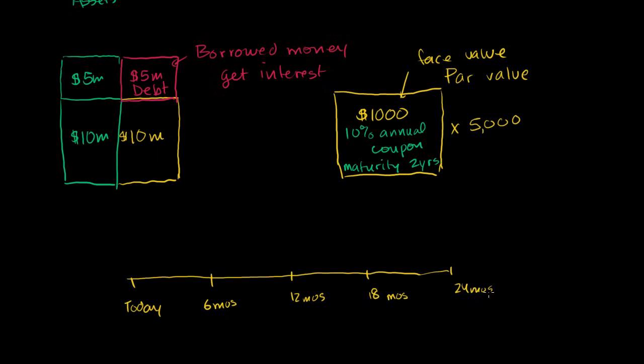And I'm only going up to 24 months because I said this bond matures in 24 months. So if you hold this bond, this certificate, what do you get? Well, it's going to pay you 10% annually, so $100 a year. But they actually pay the coupon semi-annually. So you get $100 a year, but you get half of it every 6 months. So you're going to get $50 after 6 months, $50 after 12 months, another $50 at 18 months, and a final $50 at 24 months.